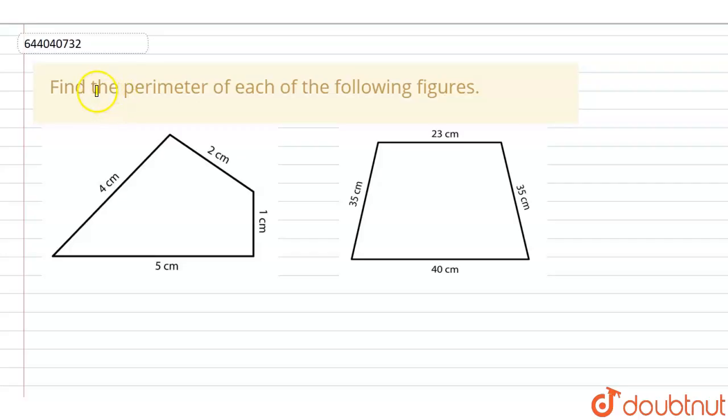It is given that we have to find out the perimeter of each of the following figures. So we are given two figures over here and we have to find out the perimeter of these two figures. Let this figure be equals to A and this figure be equals to B.